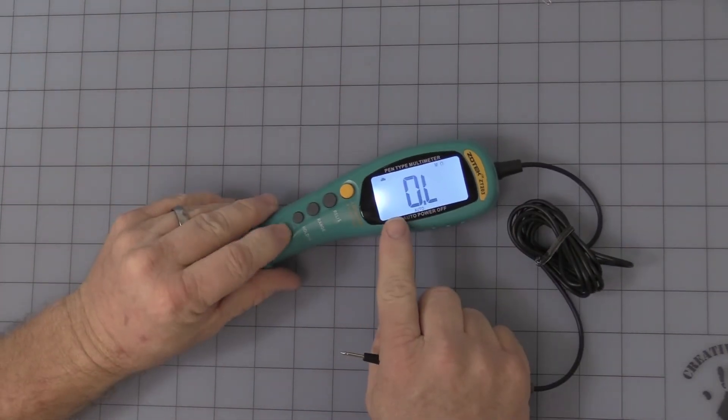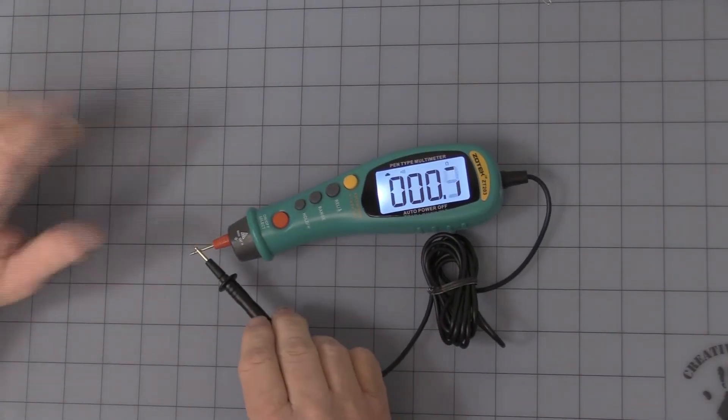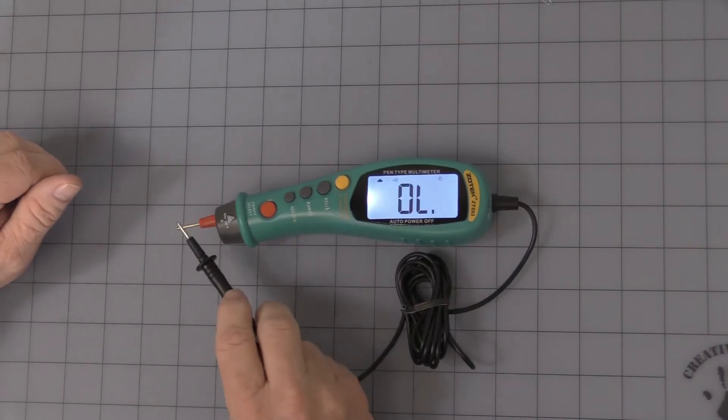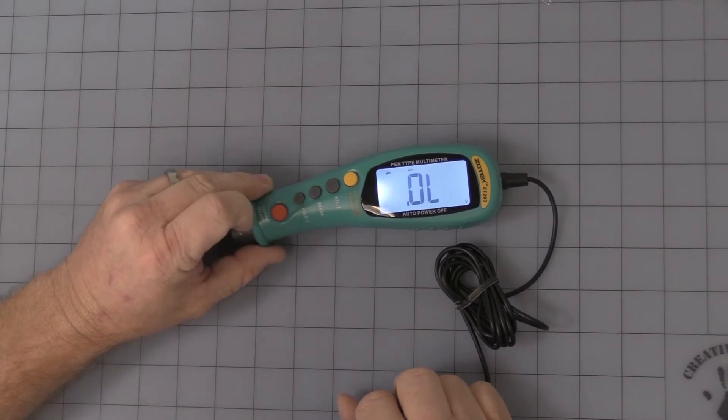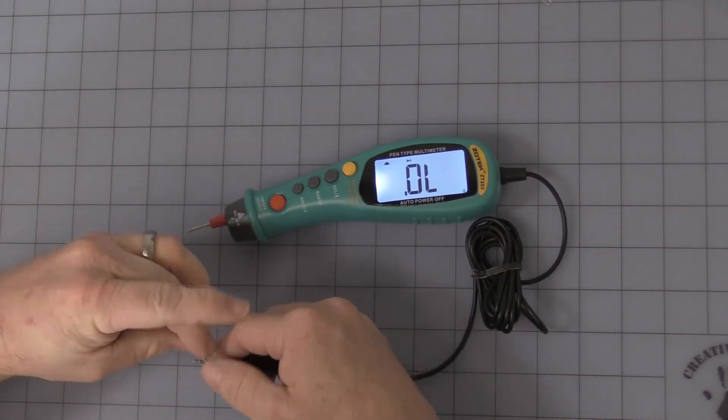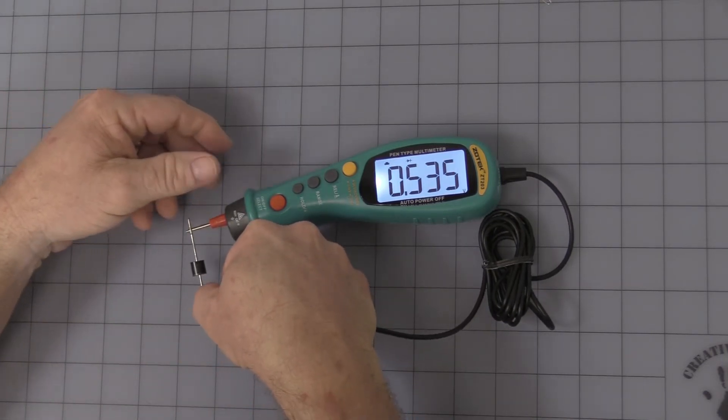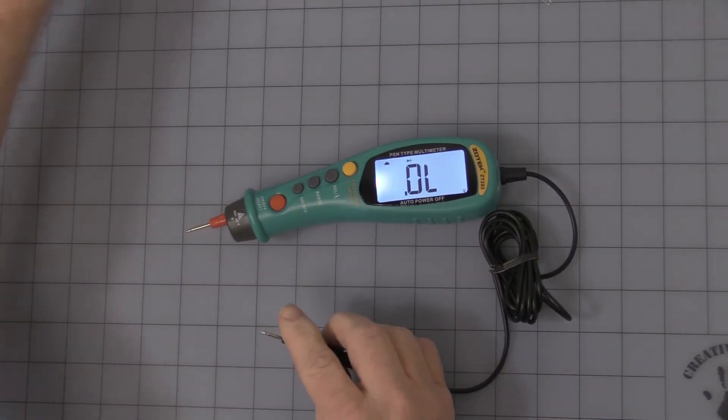Then we press the red button again and we get into audible continuity. Alright, next range is your diode tester. I have a little diode over here. 5.3. Standard diode tester.